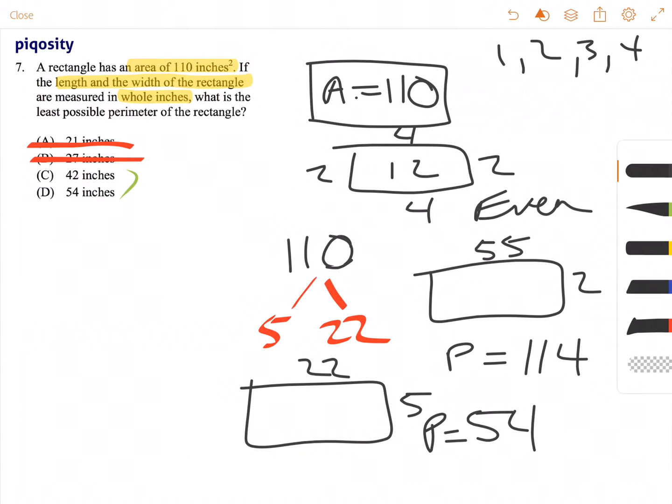But we need to make sure that answer choice C is not smaller, or it's not the correct answer. So let's look at possibilities of 42 inches. So length plus length plus width plus width is equal to 42. So what are some possibilities of this?